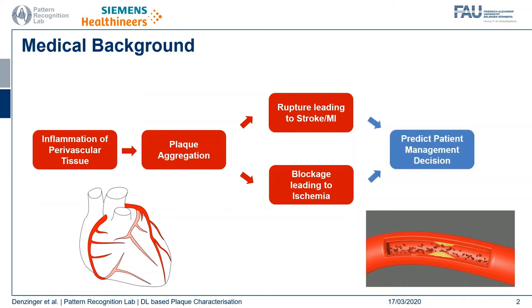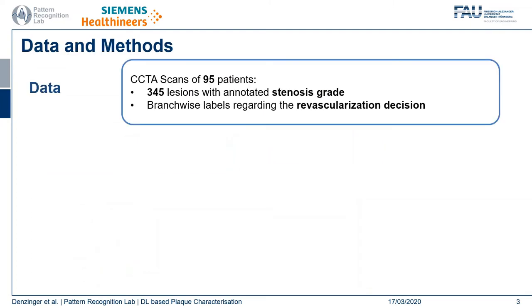What we are trying to do is predict the patient management decision taken based on the coronary CT angiography scan. For this we leverage a data collection consisting of 95 patients where 345 lesions have been annotated with the stenosis grade, and we also have branch-wise labels regarding whether the branch was revascularized using a stent or not. We propagate those branch-wise labels to the lesions with the severest stenosis grade in order to have lesion-wise revascularization labels.